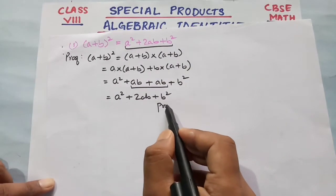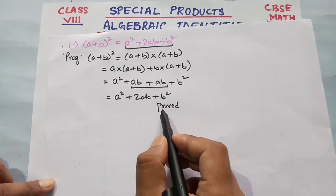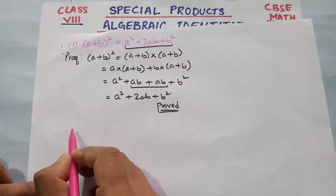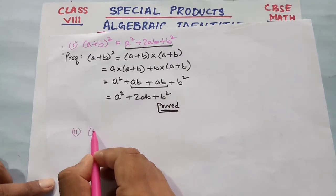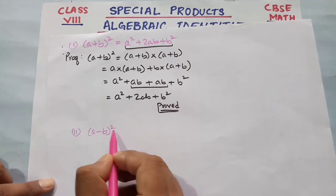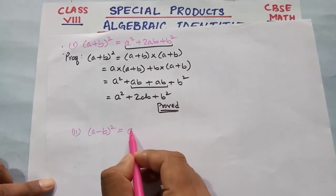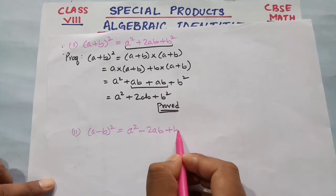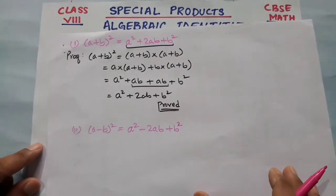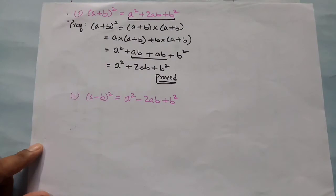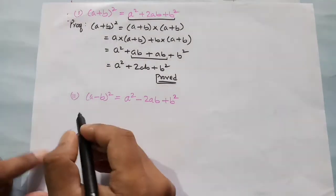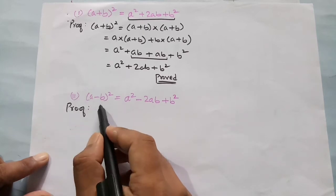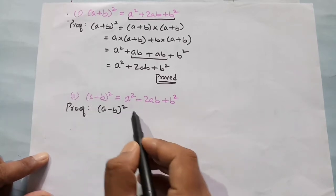This identity is proved. Similarly, we will prove the second identity: (a - b) whole square is equal to a square minus 2ab plus b square.